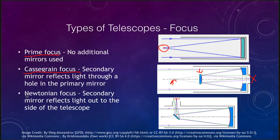The third type is the Newtonian focus, which also uses a secondary mirror, but instead of directing light straight back it is angled so the light comes off to the side. Which design is more convenient depends on the type of viewing and telescope, and a telescope would generally be designed with one or the other of these configurations.